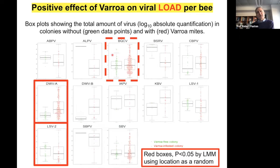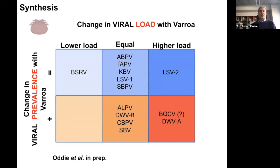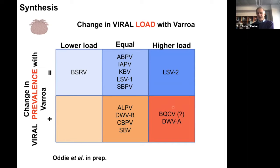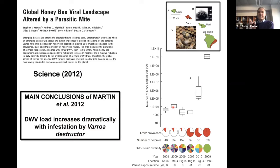Summarizing these qPCR results, we find that black queen cell virus and deformed wing virus — particularly genotype A — are particularly associated with varroa mites. They are at high load, high titer, and high viral prevalence. It's the danger box. This is exactly what Stephen Martin showed in 2012 in Hawaii: in locations invaded by varroa mites, honeybees had a very high titer of deformed wing virus, and basically all of them were infected.